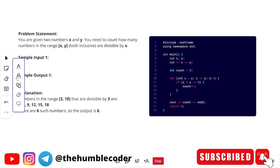Let's look at this problem that we have. So in this problem, first of all, what we are given is you are given two numbers X and Y, you need to count how many numbers in the range X to Y, both inclusive, are divisible by X. Let's understand what the problem is saying.